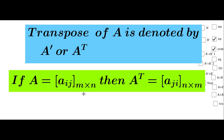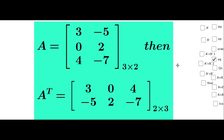The order changes in A transpose. Here A has M rows and N columns, but in Aᵀ there are N rows and M columns. Consider an example: A equals the matrix with elements 3, minus 5, 0, 2, 4, minus 7. It is of order 3 by 2.